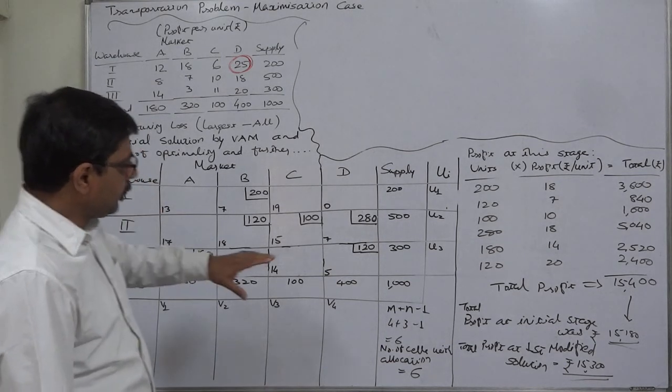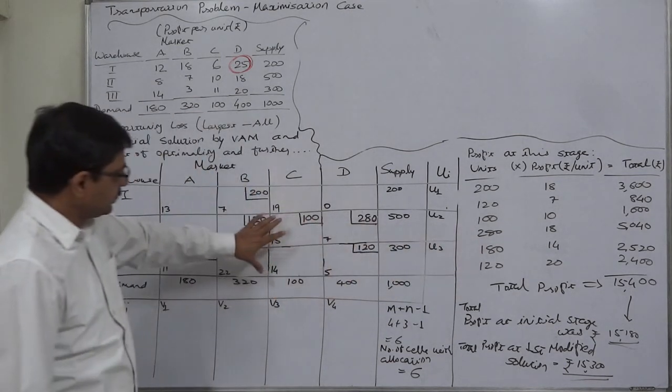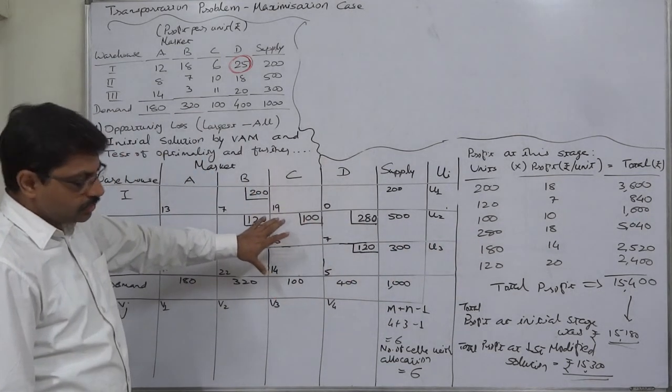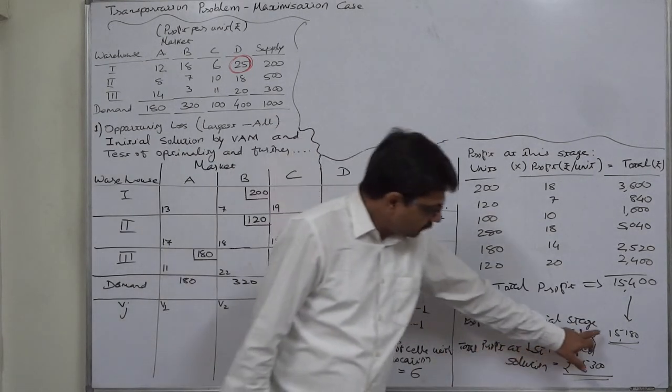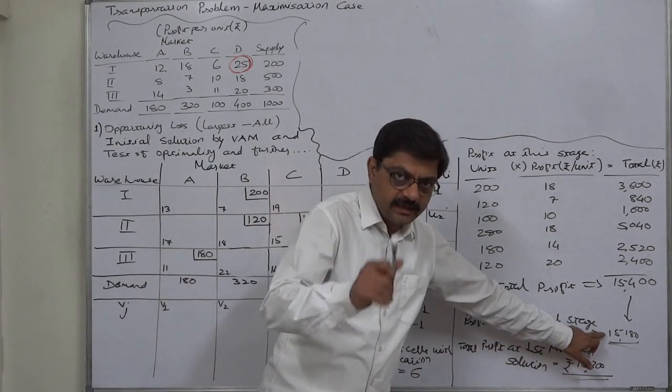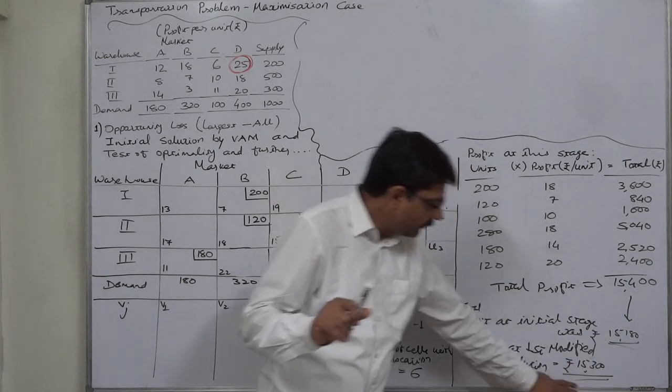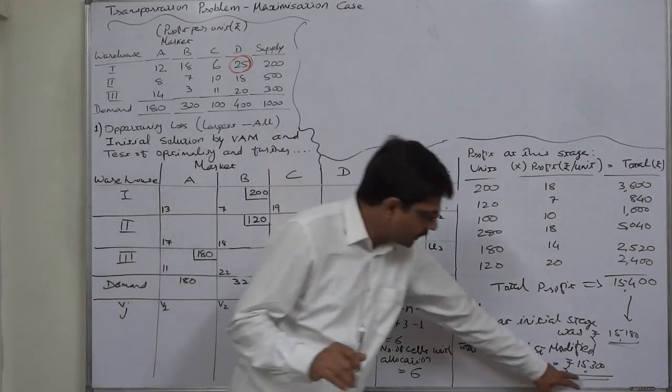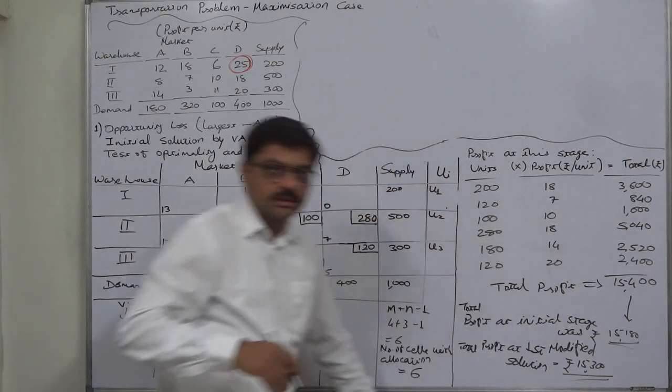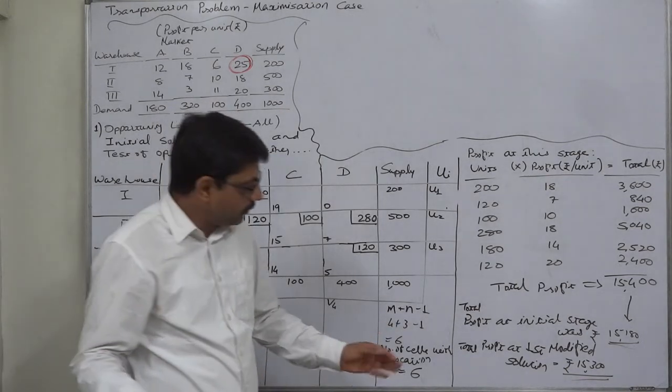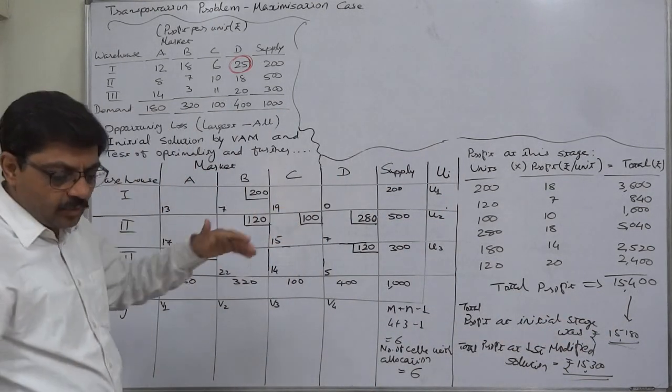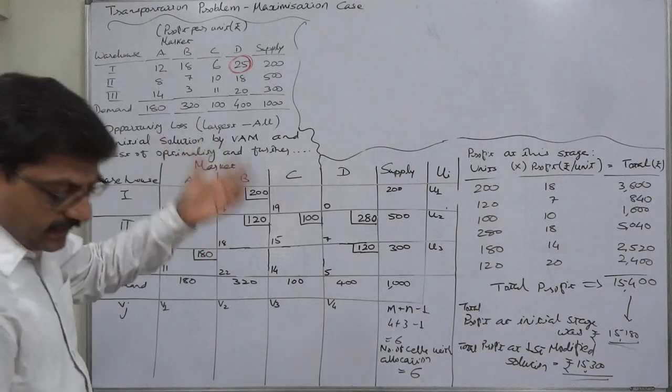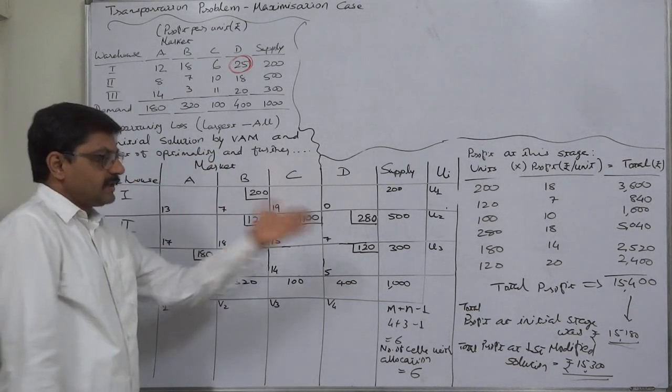Now if we calculate the profit at this modified solution, it comes to rupees 15,400. It was 15,180 at the initial stage. At the end of the first modified solution it increased to 15,300. Because this is maximization problem, now it is 15,400, meaning after second modification it has again increased.